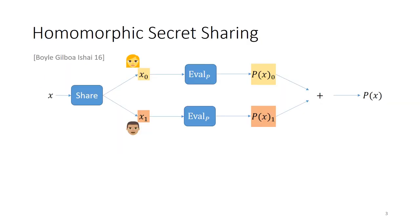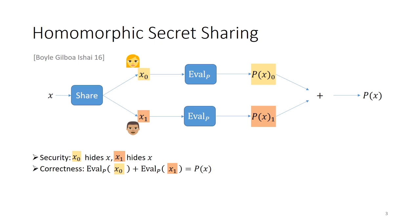Homomorphic secret sharing is a form of succinct distributed computation on private inputs. In this talk I'll be focusing on the two-server setting where each input x is run through some share algorithm which outputs two shares x0 and x1, given to the two servers Alice and Bob. Then when the servers want to evaluate some function, say a program P across these inputs, they can locally perform an evaluation procedure which leads to a share of the results. The security should require that each of these shares individually completely hides all information about x.